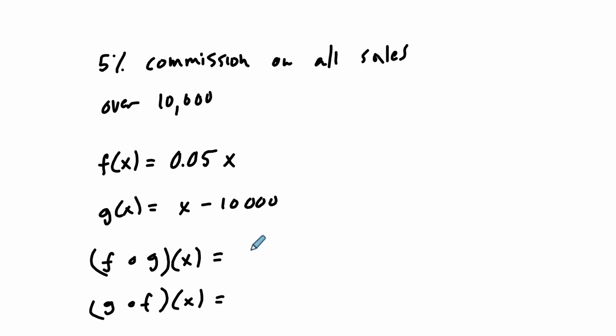So f of g of x, or f composed of g of x, would be f of g of x. And that would mean we first take our sales, subtract $10,000 first. It's based on x minus $10,000. We get some number, and then multiply that number by 5%. And that is, in fact, our commissions. And this equation could have been written from the start, but I want you to see how compositions can also be used to reach the same results.